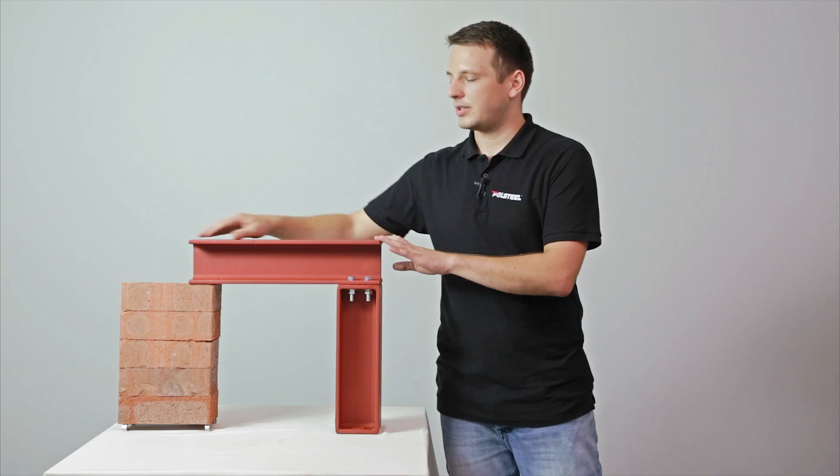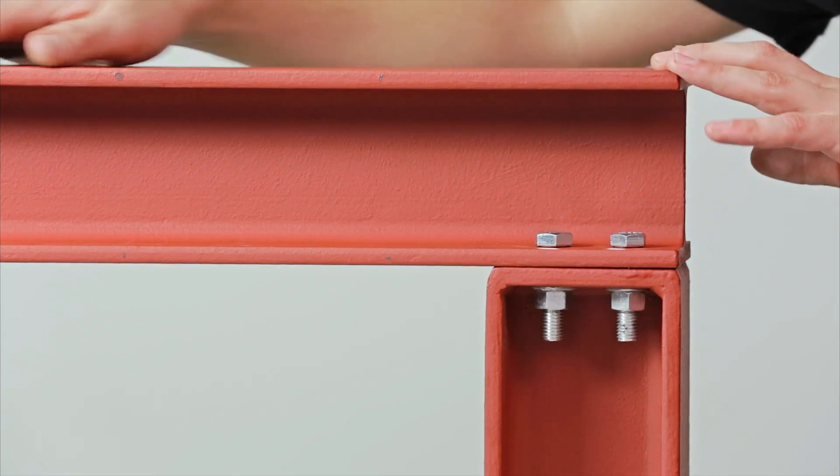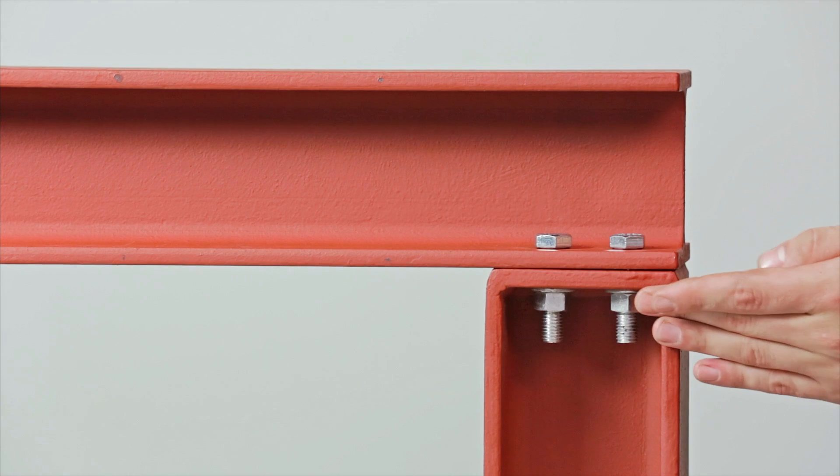The simplest of the structures is a post and beam, consisting of a horizontal beam supported by a vertical column with a plate welded to the top.